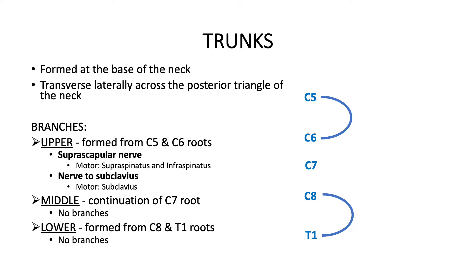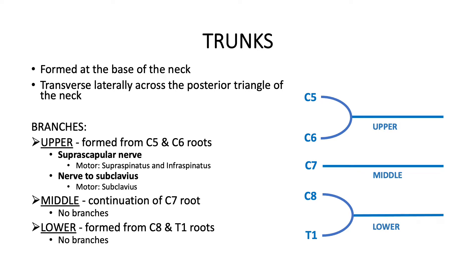The roots of the brachial plexus transition into the trunks at the base of the neck. These then traverse laterally across the posterior triangle of the neck before entering the upper limb. There are three trunks in total: the upper, the middle, and the lower, corresponding to their respective positions. The upper trunk is formed from C5 and C6, the middle trunk is a direct continuation of C7, and the lower trunk from C8 and T1. Branches at this level come solely from the upper trunk: the suprascapular nerve, which supplies supraspinatus and infraspinatus, and the nerve to subclavius, which provides motor innervation to the subclavius muscle.